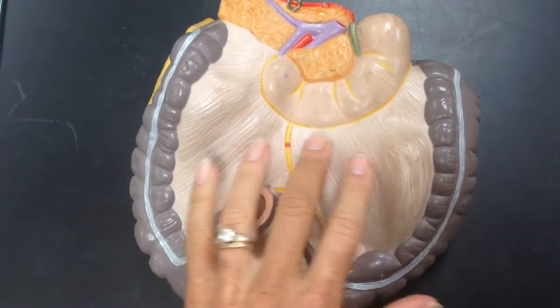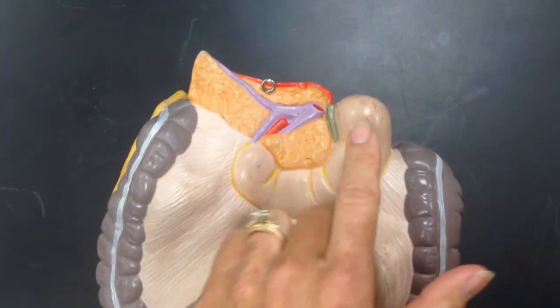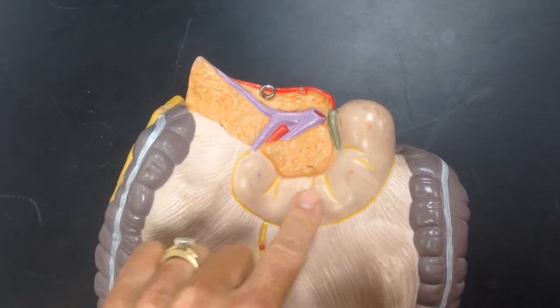Covering this area is mesentery. Up here, we have the duodenum.